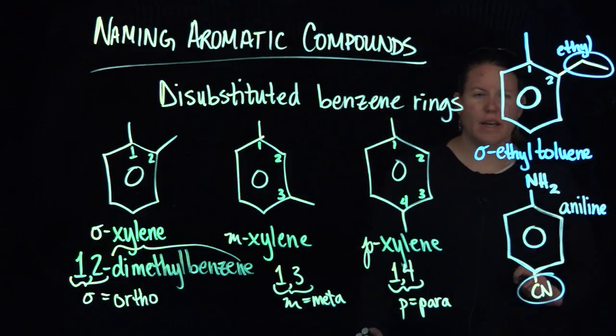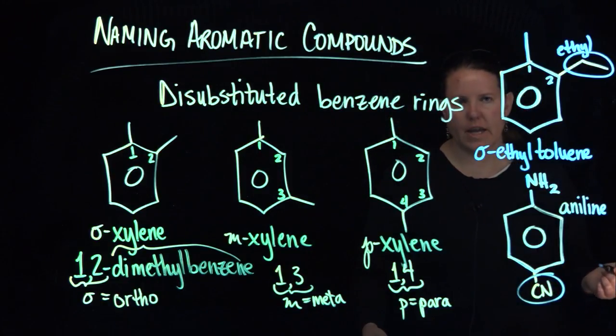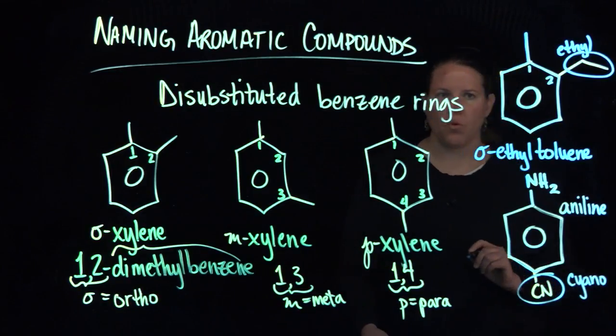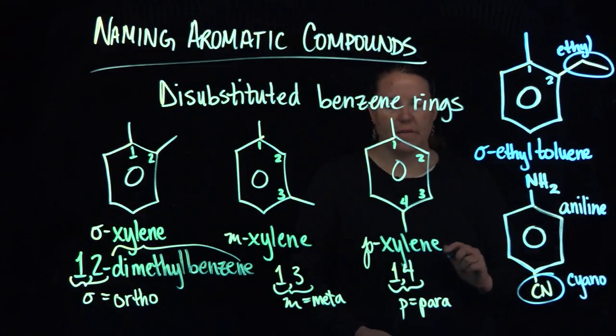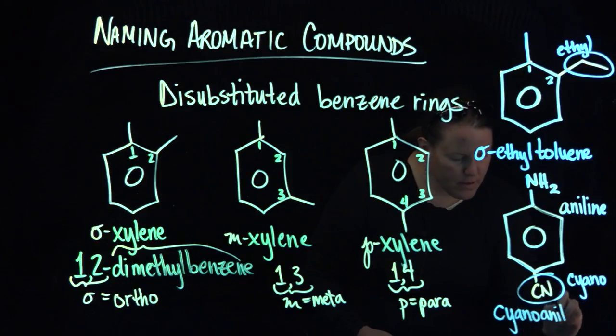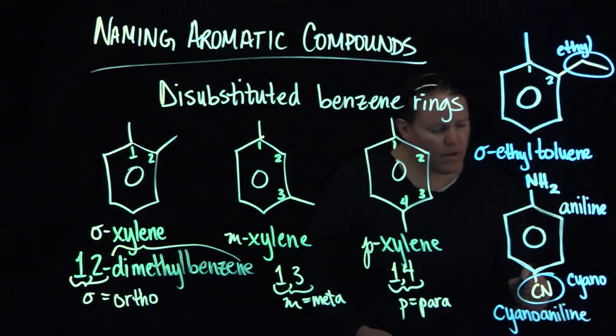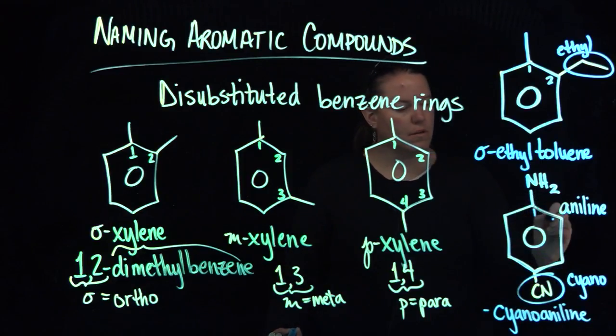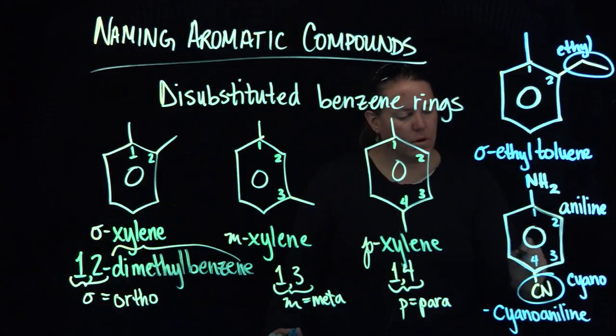That C triple bonded to N is called several names. In basic organic naming, we have called it a cyano before, so why don't we call it that for this one. This would be cyanoaniline. And then, because this is 1, 2, 3, 4, we could call that para.